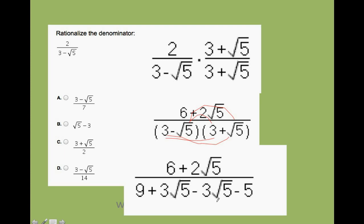And look what happens. The middle terms are going to cancel because plus 3 square root of 5 minus 3 square root of 5, that equals 0. If your middle terms where the square root is did not cancel, you did something wrong. So be very careful. Because remember, our goal is to get rid of the square root.